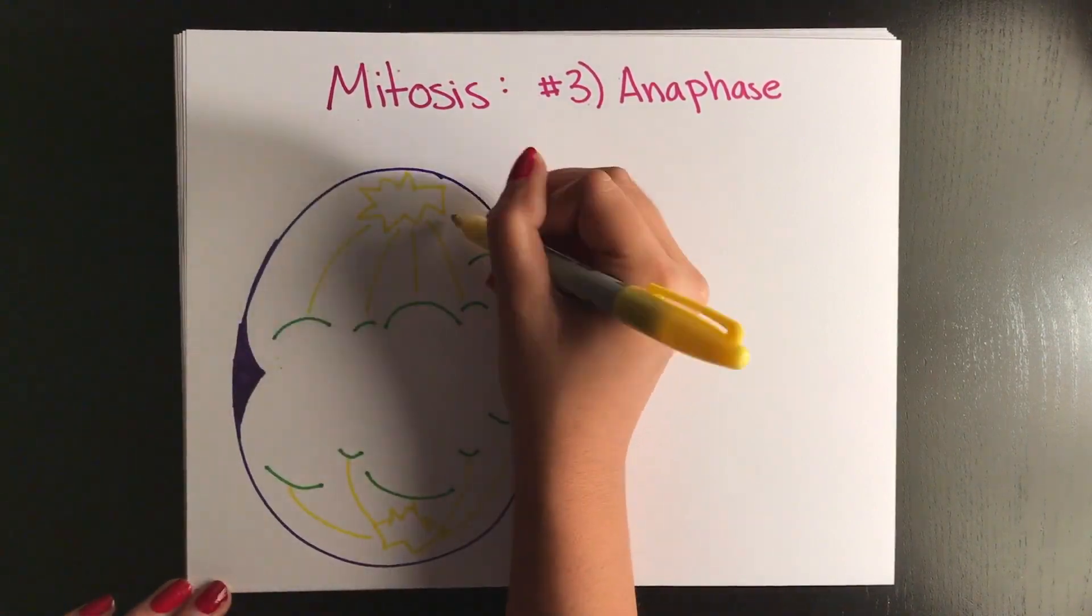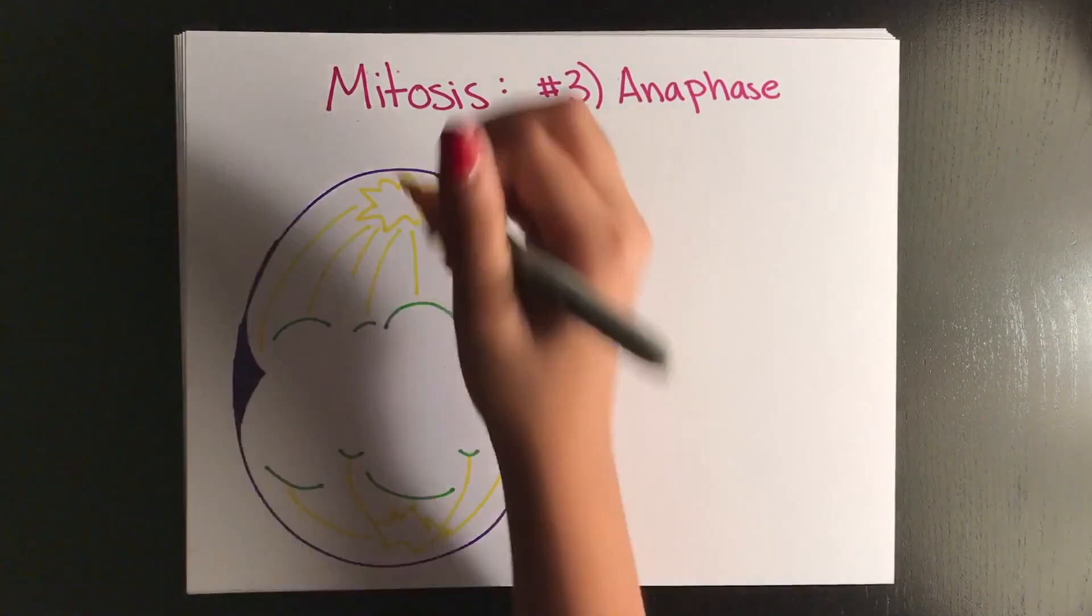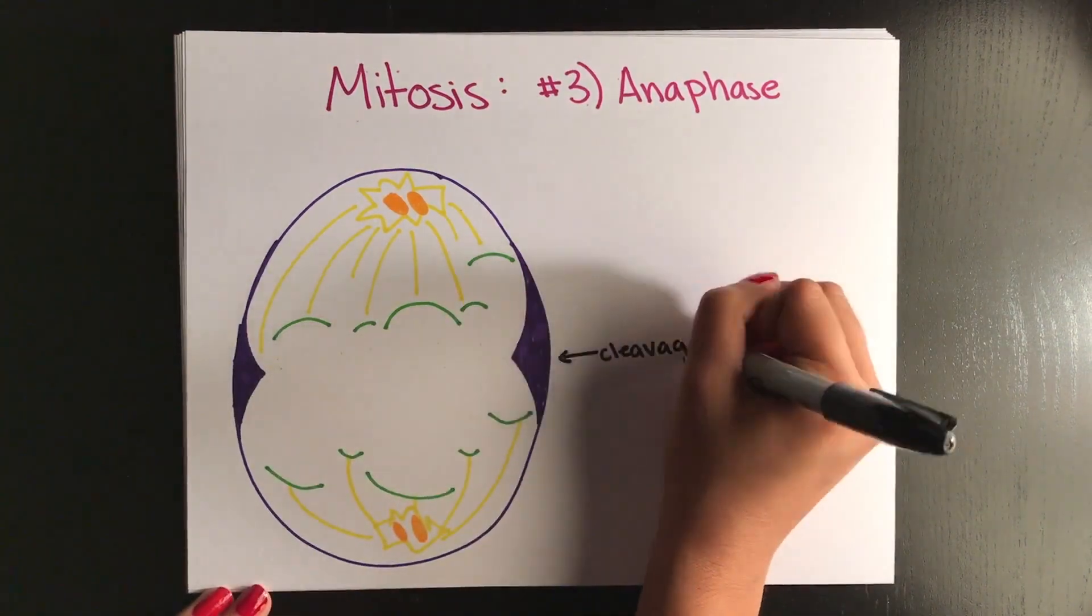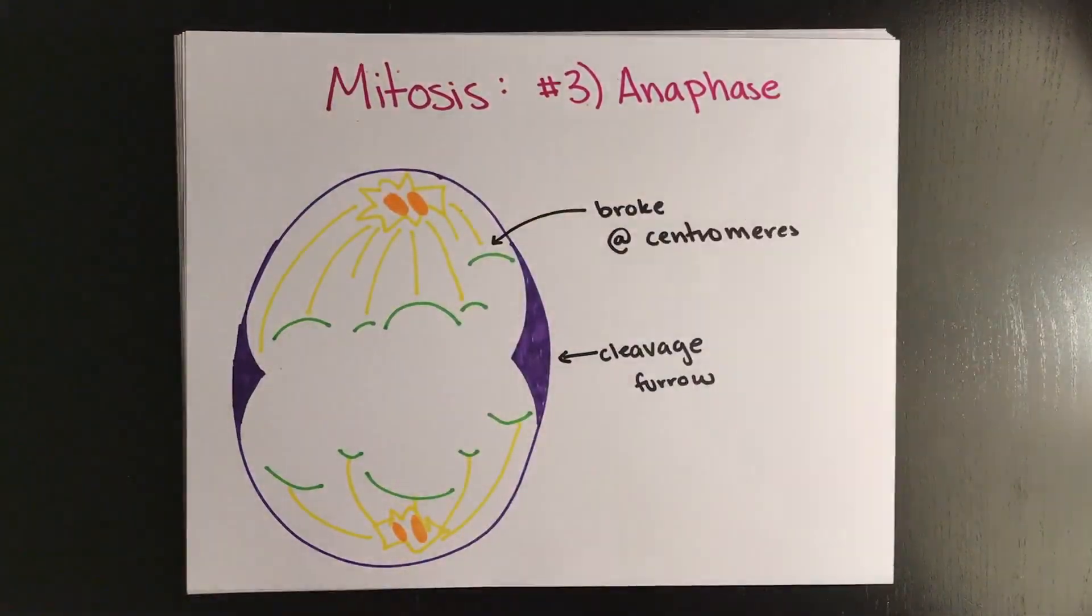During this time, the cell begins to form a cleavage furrow, which occurs in animal cells, where the cells kind of pinch inward, beginning to form two separate cells.